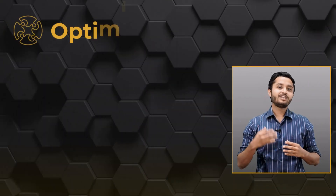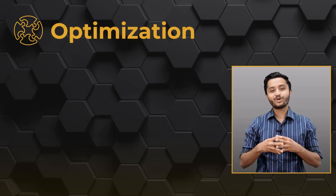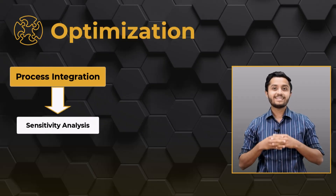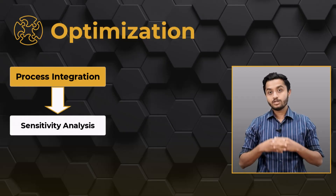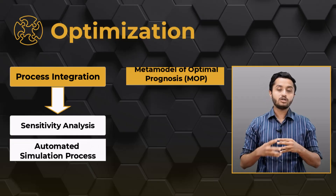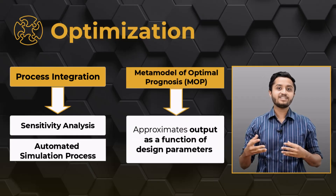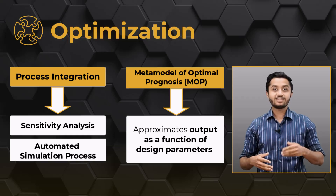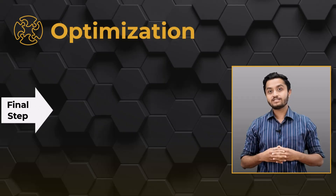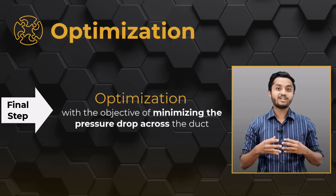Hello and welcome to the lesson on optimization using the metamodel of optimal prognosis. So far we have covered the process integration steps and sensitivity analysis. Consequently, we have created an automated simulation process and a metamodel of optimal prognosis that approximates the output as a function of design parameters with a high predictive quality. Next we will proceed to the final step, which is optimization with the objective of minimizing the pressure drop across the duct.